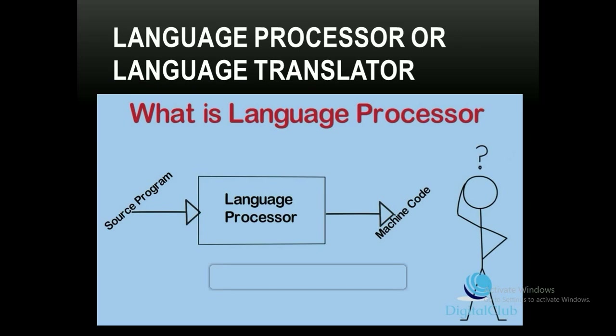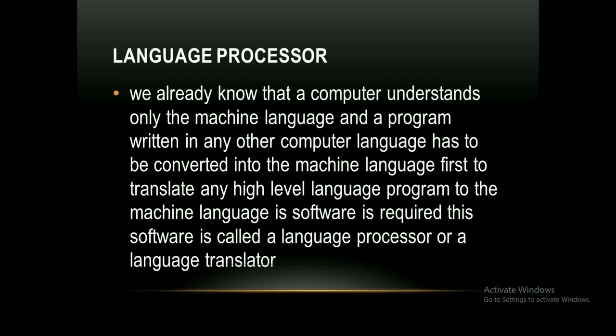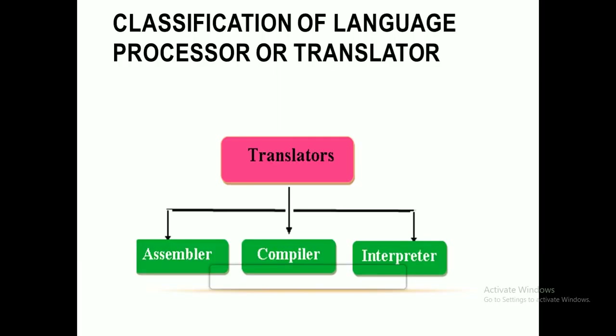A software which converts a source program into machine code is called a language processor. A computer understands only machine codes — that is, 0s and 1s or binary digits. To translate any high-level language program into machine language, a software is required. This software is called a language processor or a language translator. There are three types of translators: assembler, compiler, and interpreter.